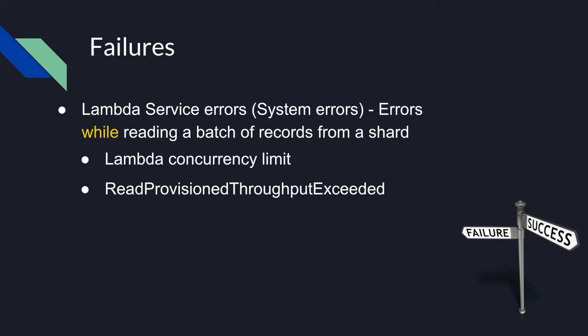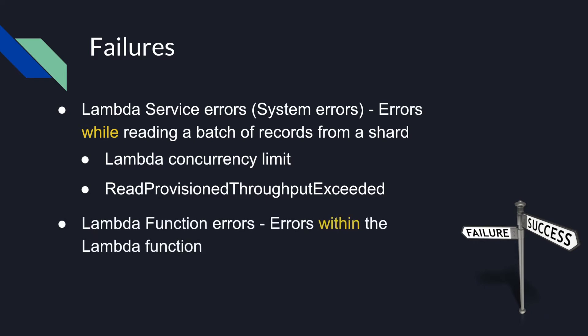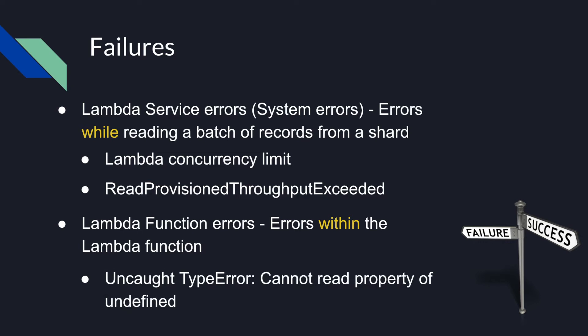The second type of failure is Lambda function errors. Those errors happen in the Lambda function itself while trying to process the batch. For example, it can be an exception thrown while processing a specific record in a batch, such as an uncaught TypeError: cannot read property of undefined.